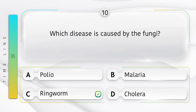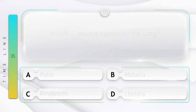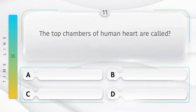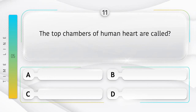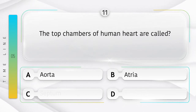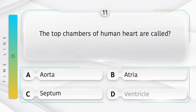Which disease is caused by fungi? Options: A) Polio, B) Malaria, C) Ringworm, D) Cholera. The answer is option C, Ringworm. The top chambers of the human heart are called — options: A) Aorta, B) Atria, C) Septum, D) Ventricle.